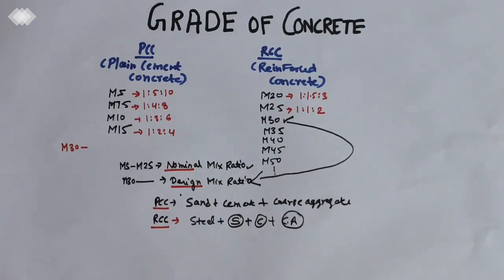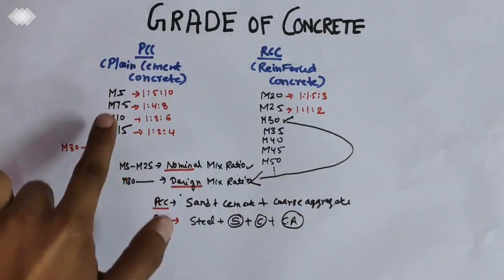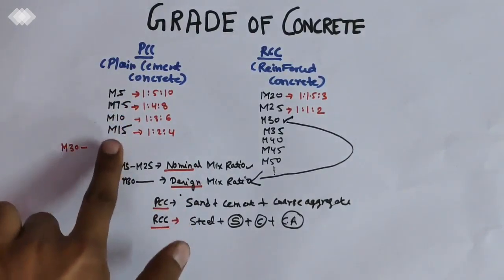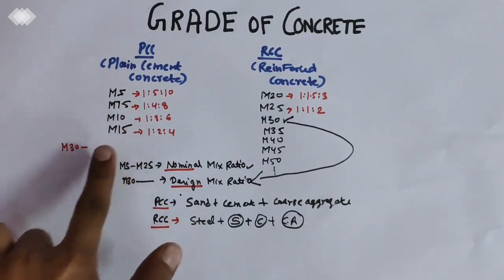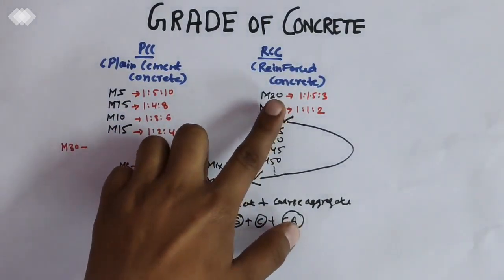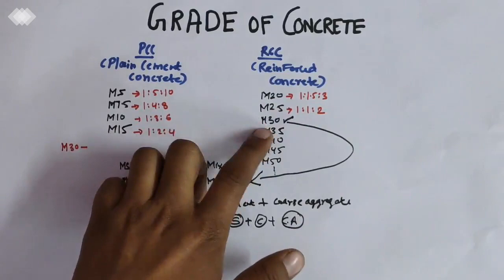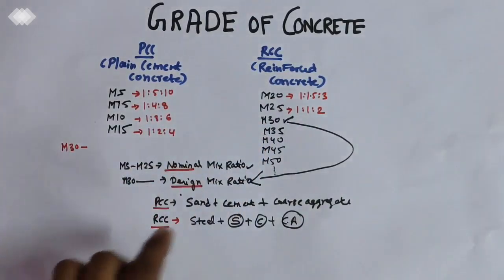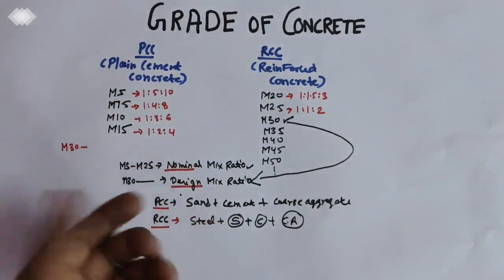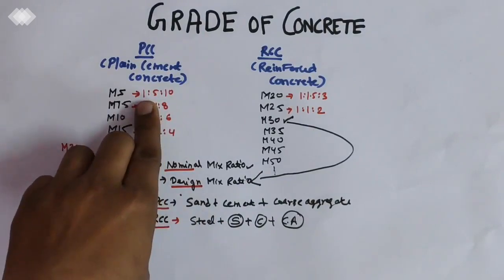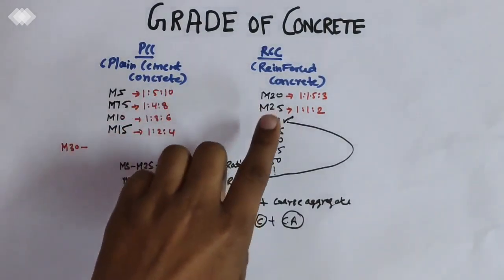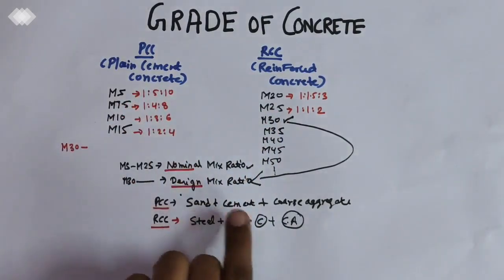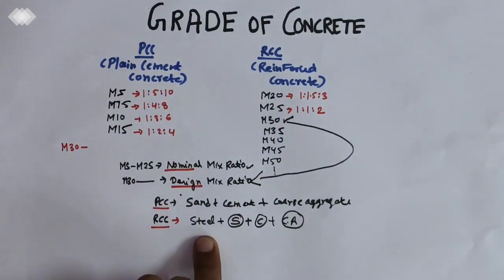The PCC comes under these types of grade of concrete: M5, M7.5, M10, M15, and under RCC: M20, M25, M30, M35, and so on. The basic difference is these ratios include sand, cement, and coarse aggregate, while in RCC the same sand, cement, coarse aggregate plus steel.